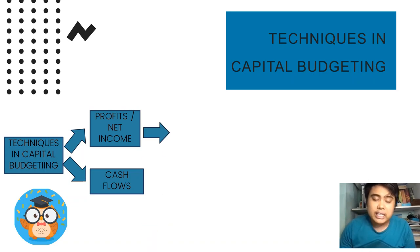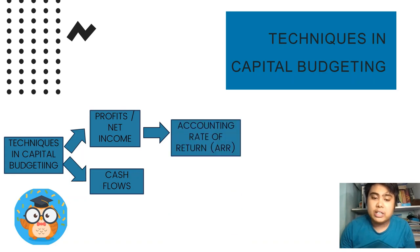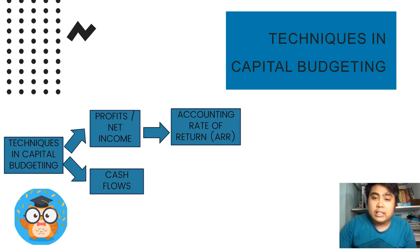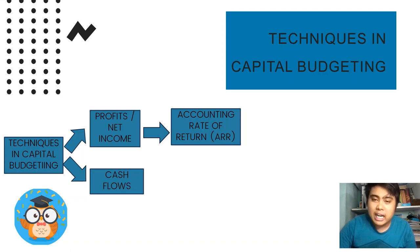When it comes to the technique using net income, there is only one: the accounting rate of return, also known as ARR. That is what ARR is, and we will discuss it in detail later on. For now, we are just classifying the techniques so you can remember them more easily.